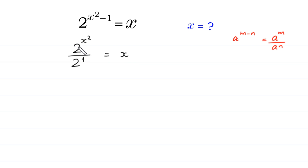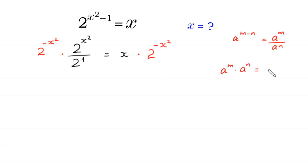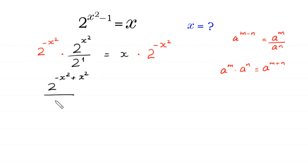Now, because here we have 2 to the power x squared, we multiply both sides of this equation by 2 to the power negative x squared. On the left side, we multiply by 2 to the power negative x squared.